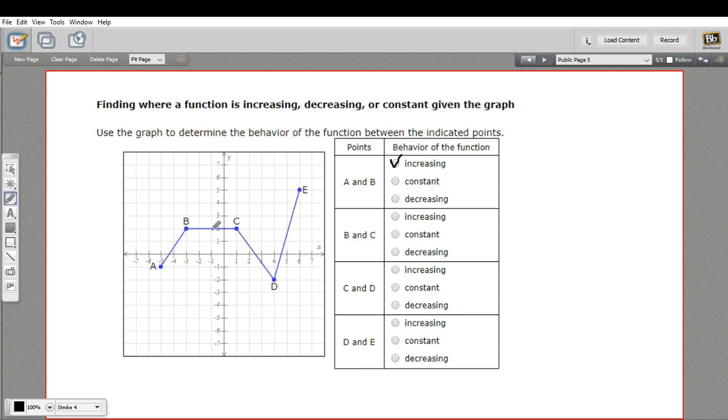Between B and C, it's just flat, so that means the function is constant. It's staying the same. It's at a value of 2 this whole time.